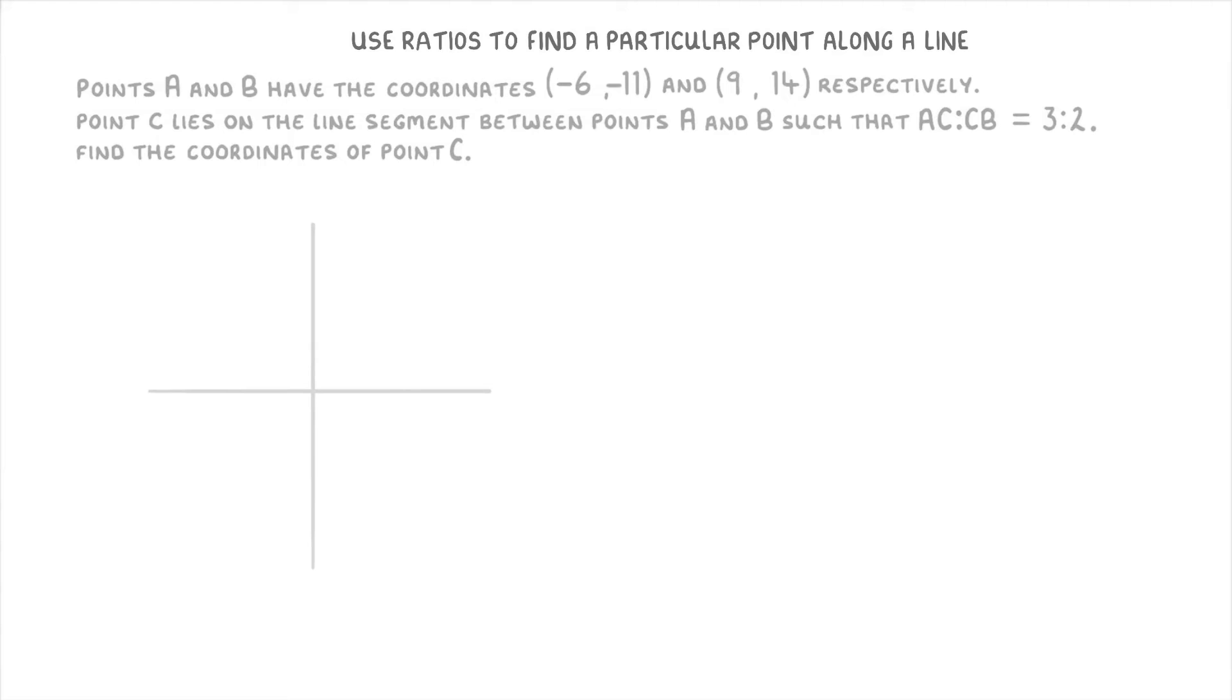So for this question, we can start by putting point A down here, at roughly where we think negative 6, negative 11 should be, and B up here at 9, 14. And if you put it somewhere slightly different, like down here or over here, it really doesn't matter. It won't affect our working out at all.